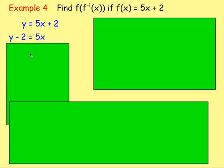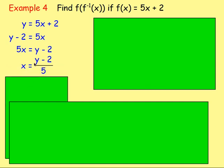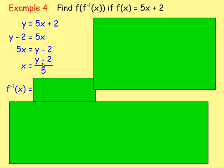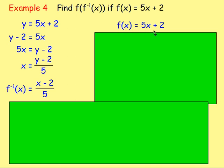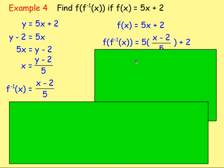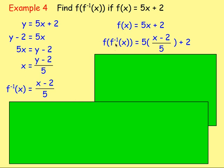Write it back to front if you want, then divide both sides by 5, so x equals y minus 2 over 5. Once done, swap the x for f to the negative one of x and swap the y for x — that is the inverse. Now I'm asked to work out f of this inverse. Starting with f of x equals 5x plus 2, you're replacing x with the inverse, which is x minus 2 over 5.